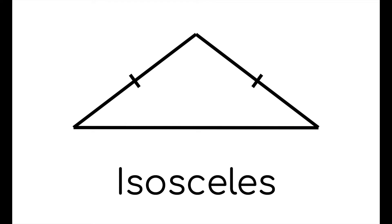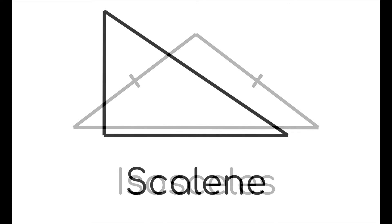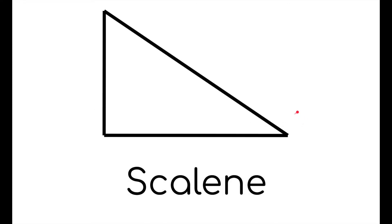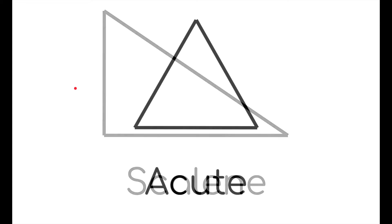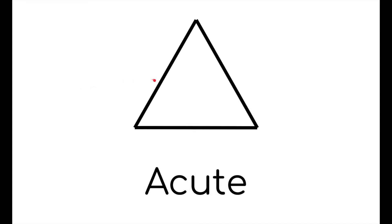A scalene triangle is a triangle with all the sides different. An acute triangle is a triangle with all its angles under 90 degrees.